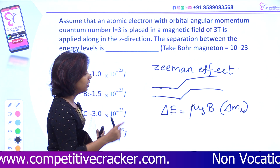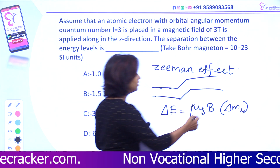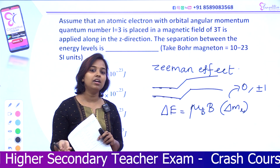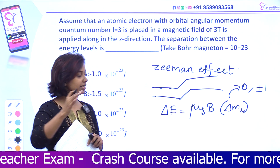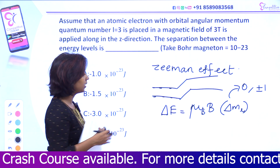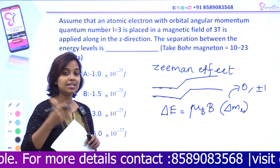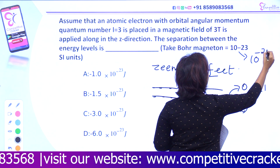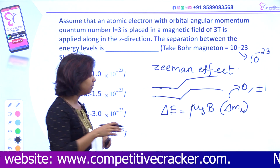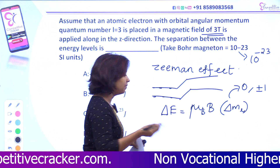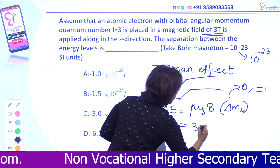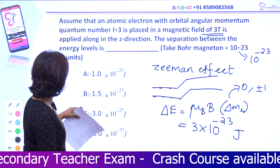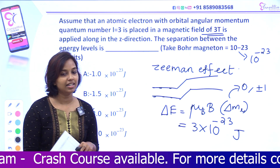So delta m_l — in terms of the selection rule — delta m_l is either 0 or plus or minus 1. So we are going to shift by plus or minus 1. We substitute: mu_B is 1 magneton = 10 to the power minus 23, and the applied magnetic field B is equal to 3 tesla. So the energy level separation is 3 into 10 to the power minus 23 joules. You can see this in option C — option C is the correct answer.